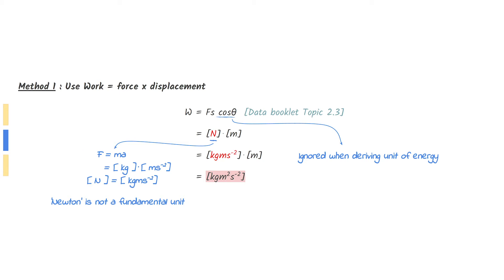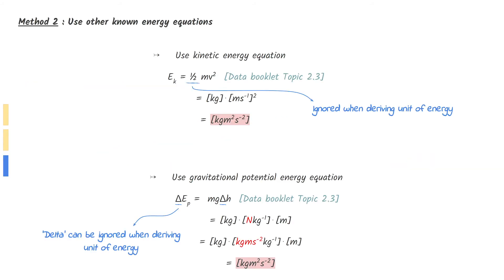Use F equals MA to find the fundamental unit for Newton and put them all together. Another method is to use other equations related to energy such as equation for kinetic energy or gravitational potential energy.